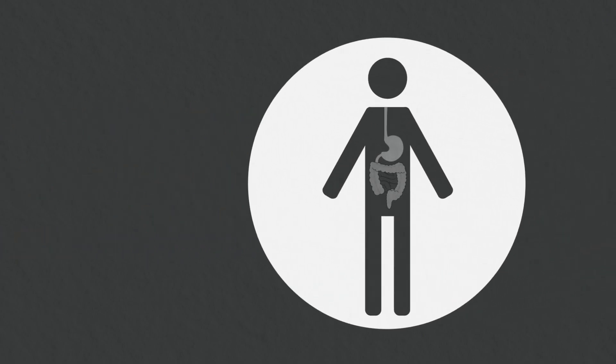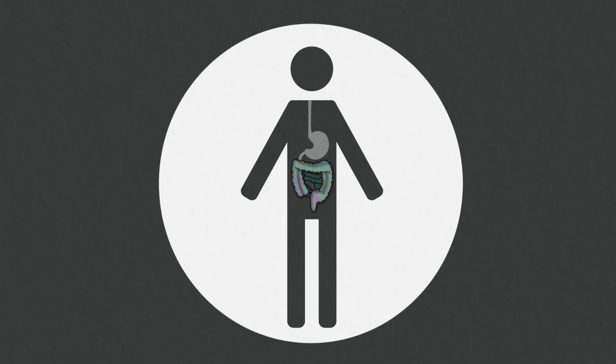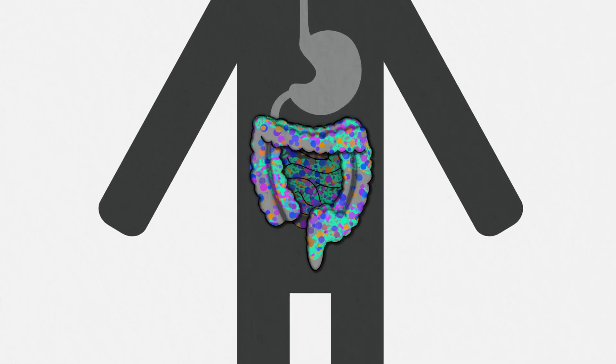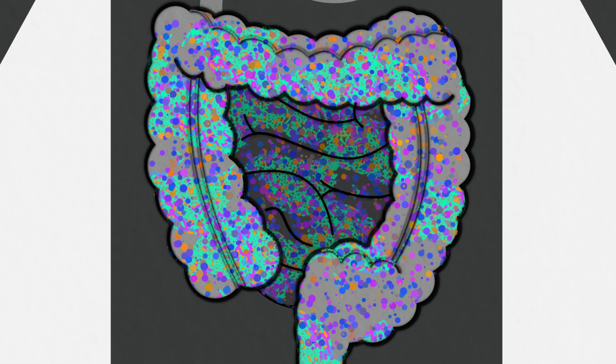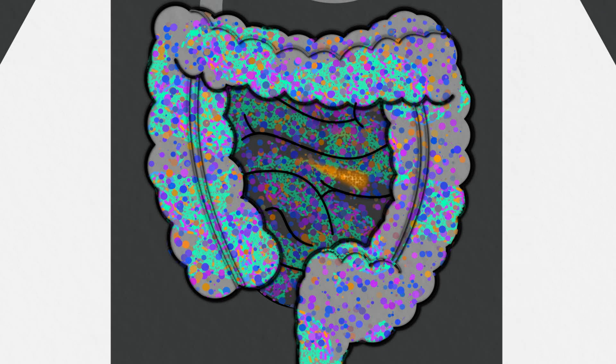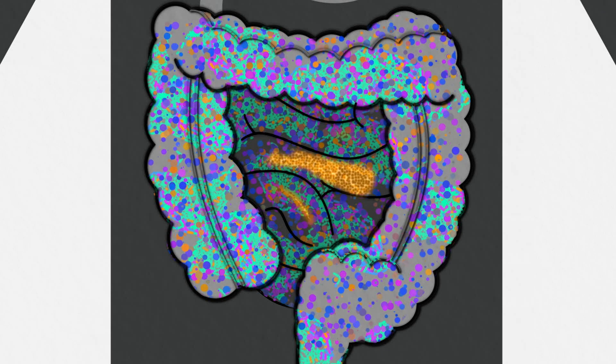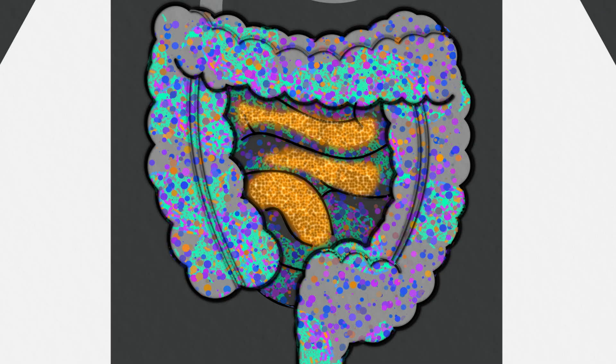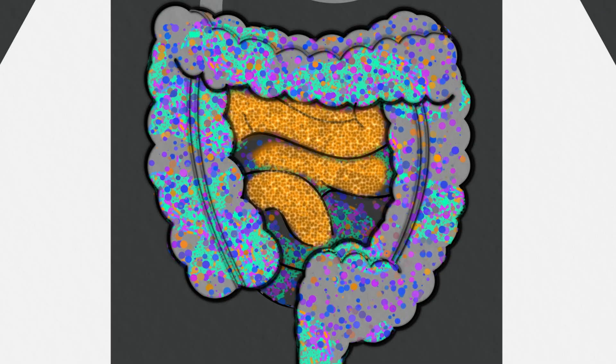The human digestive tract is home to an estimated 500 to 1,000 different species of microorganisms, most of which are harmless or even helpful and live together in harmony. But if something upsets the balance of these bacteria, such as treatment with antibiotics or cancer chemotherapy, certain harmful organisms can multiply out of control and cause illness.